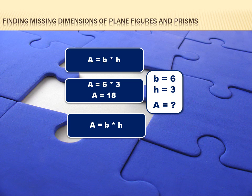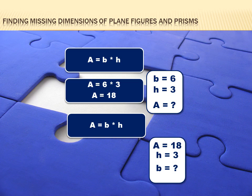But let's put a twist on it. Let's make this a little more complicated. What if you knew that the area equaled the base times the height, and you also knew that the area was 18 and the height was three, but you were asked to figure out what the base was? What would you do?